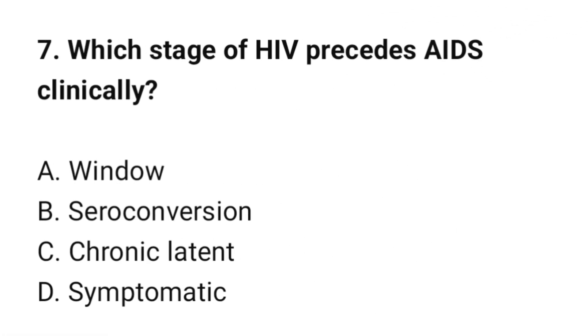Question number 7: Which stage of HIV precedes AIDS clinically? The correct option is C: Chronic latent.